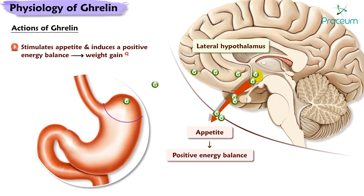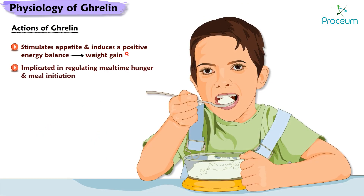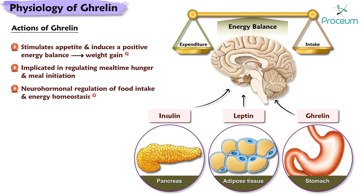Ghrelin stimulates appetite and induces a positive energy balance that can lead to weight gain. It is implicated in regulating mealtime hunger and meal initiation. Accumulating evidence indicates that ghrelin plays a central role in the neurohumoral regulation of food intake and energy homeostasis.